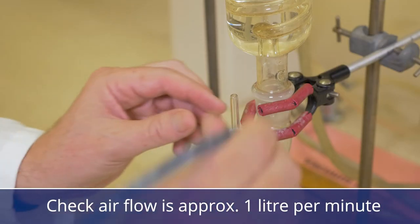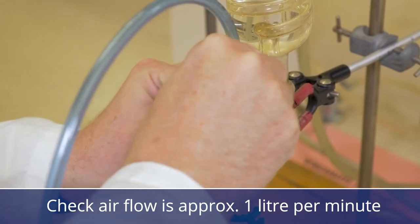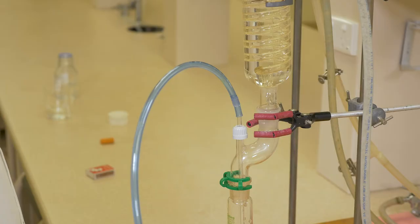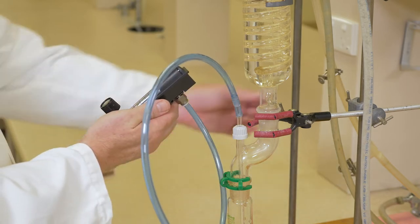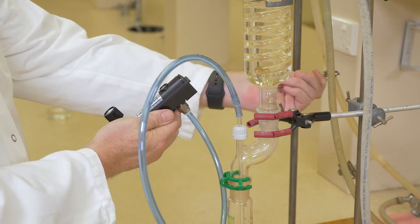Before doing the test, it is important to check that the airflow is approximately 1 litre per minute. This can be most easily done with a flow gauge, as seen here. An incorrect flow rate can result in incorrect results.